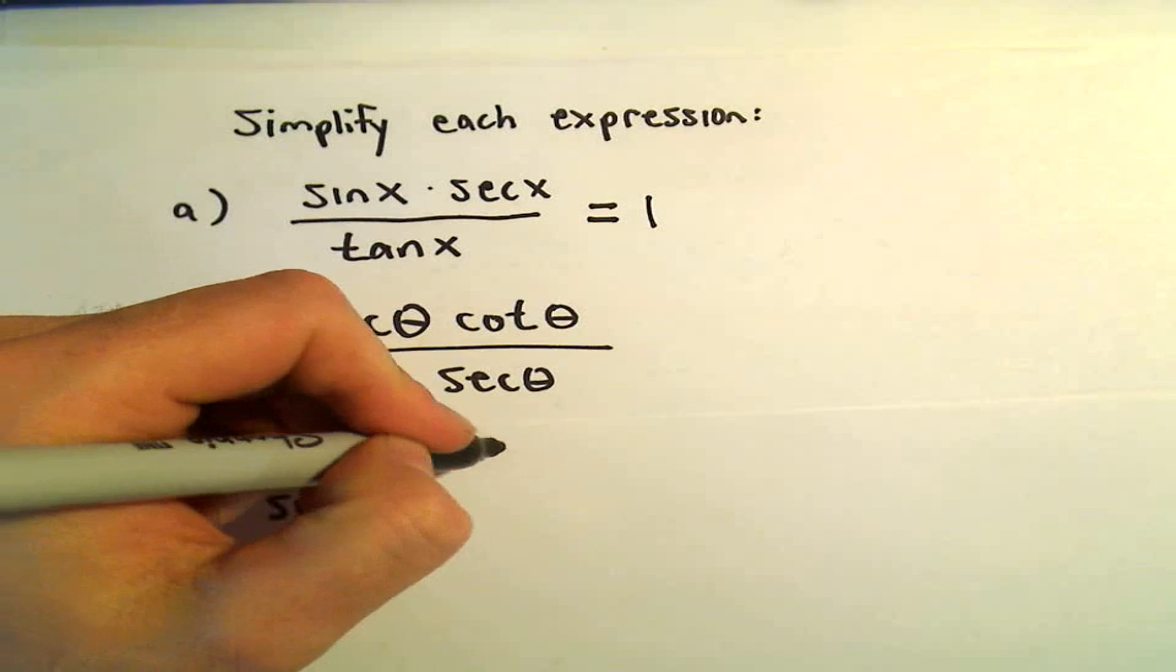Let's look at part B. We've got cosecant times cotangent divided by tangent times secant. So I think I'm going to do the same thing in this example. Cosecant, that's going to be 1 over sine theta. Cotangent is cosine theta over sine theta. Tangent of theta, that's going to give us sine theta over cosine theta. And then secant of theta is going to be 1 over cosine of theta.